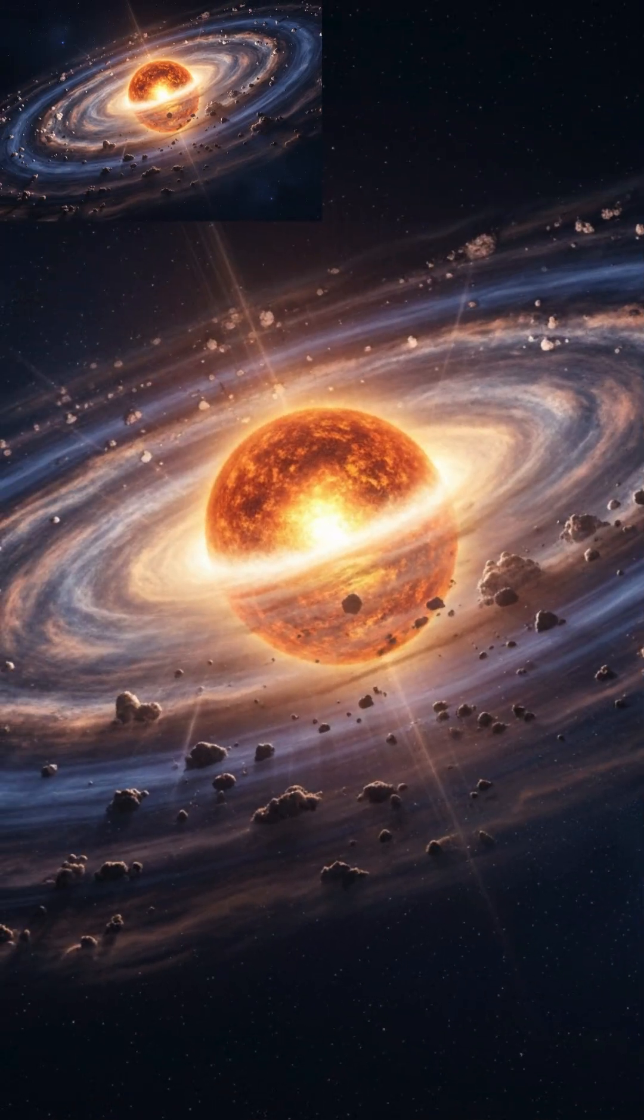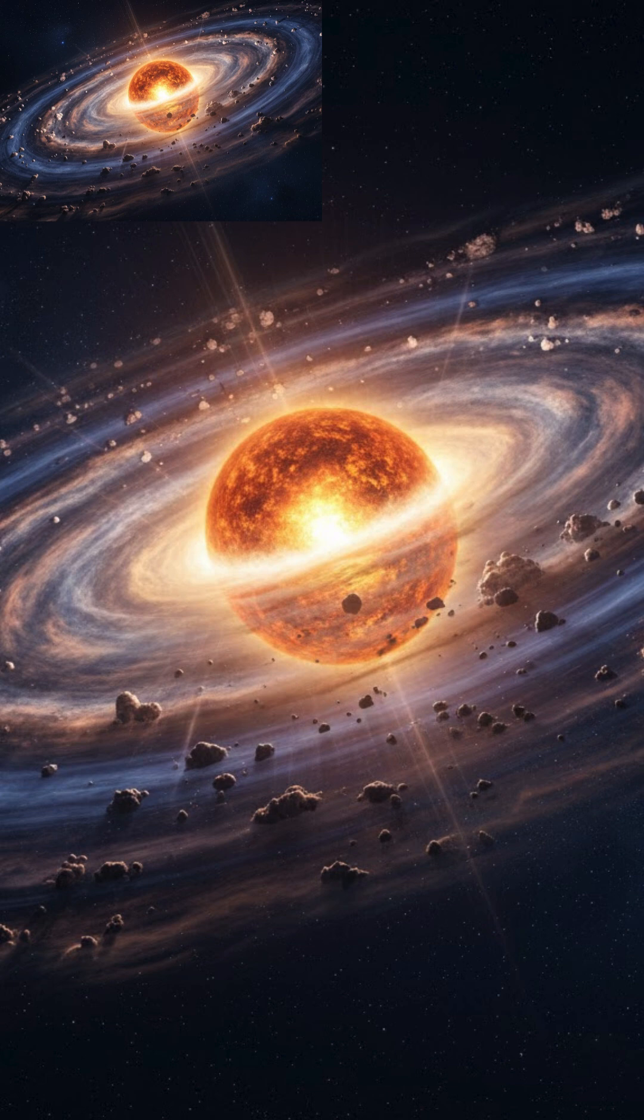As the cloud collapsed, the majority of the material gathered at the center to form the Sun, while the remaining matter flattened into a protoplanetary disk.